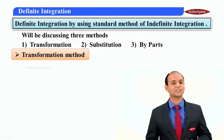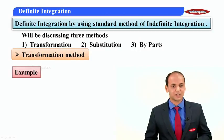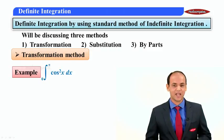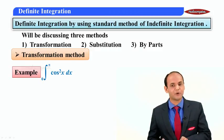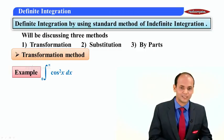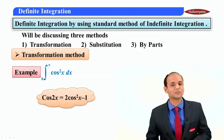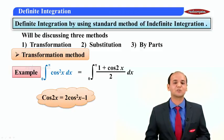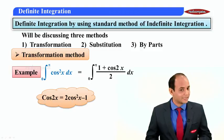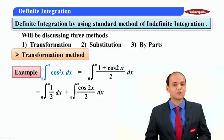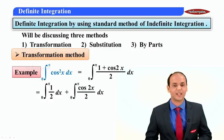I am going to discuss the transformation method using a question. The question says: integral 0 to π of cos²x dx. As we do in indefinite integration, I am going to simplify cos²x in terms of cos 2x — that is, transform it. The formula is cos 2x = 2cos²x − 1, so cos²x is written as (1 + cos 2x) / 2. Separating the integral, I get integral 0 to π of (1/2) dx plus integral 0 to π of (cos 2x)/2. The integration of (1/2) dx is x/2.